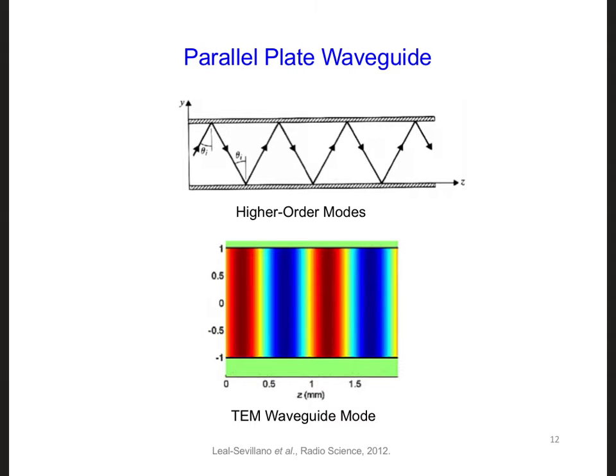Since the ionosphere reflects electromagnetic waves below about 100 kilohertz, and the ground also reflects electromagnetic waves at these frequencies, the ground and ionosphere form what is called a parallel plate waveguide, where electromagnetic waves can bounce back and forth and propagate around the world between the ground and the lower ionosphere.